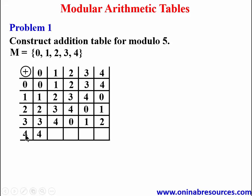We go to the last row: 4 plus 0 gives 4, 4 plus 1 gives 5 and 5 minus 5 gives 0, 4 plus 2 gives 6 and 6 minus 5 gives 1, 4 plus 3 gives 7 and 7 minus 5 gives 2, and finally 4 plus 4 gives 8 and 8 minus 5 gives 3. For your information, when working with tables in mathematics, showing the workings is not important — just ensure your entries are correct. You can do it mentally or work it out separately.